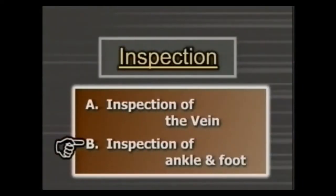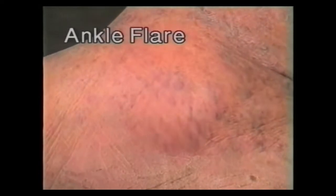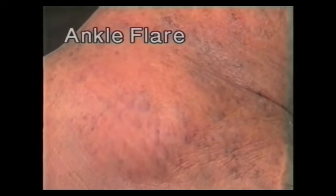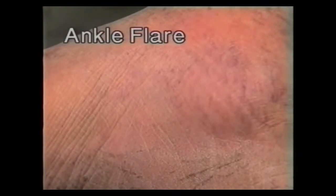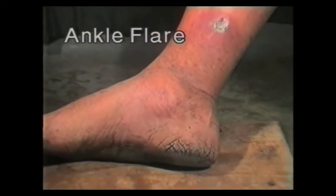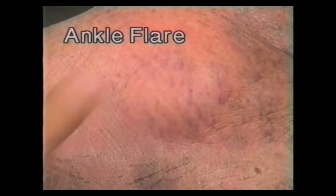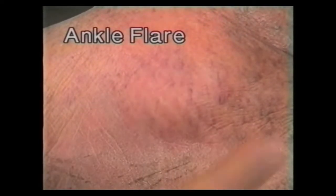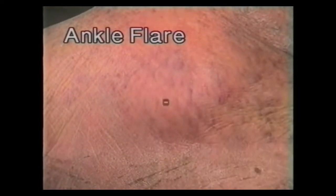Now we will inspect the ankle and the foot. Inspect the medial aspect of the ankle for ankle flare or venous flare. It is a diffuse soft swelling or fullness with small subcutaneous dilated venules around the ankle, usually filling the hollow between the medial malleolus and the heel. Ankle flare is seen in association with incompetency of ankle perforators.